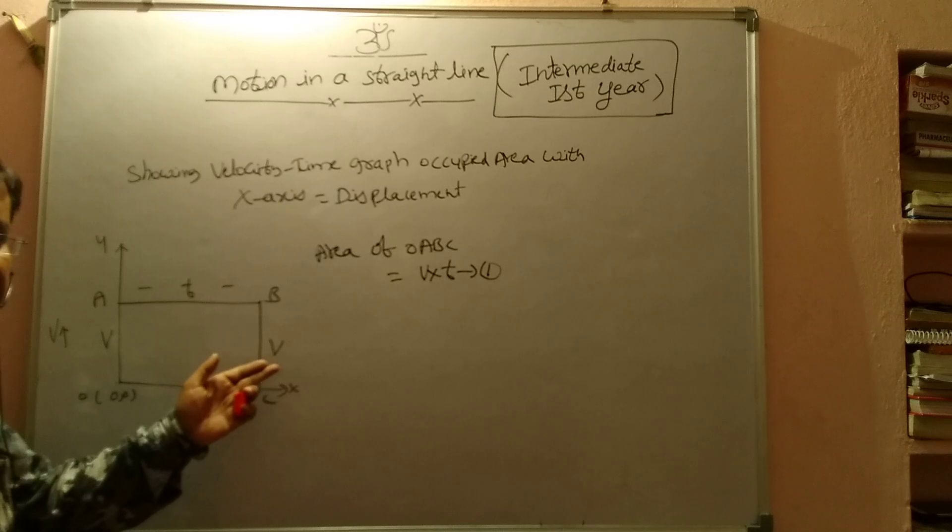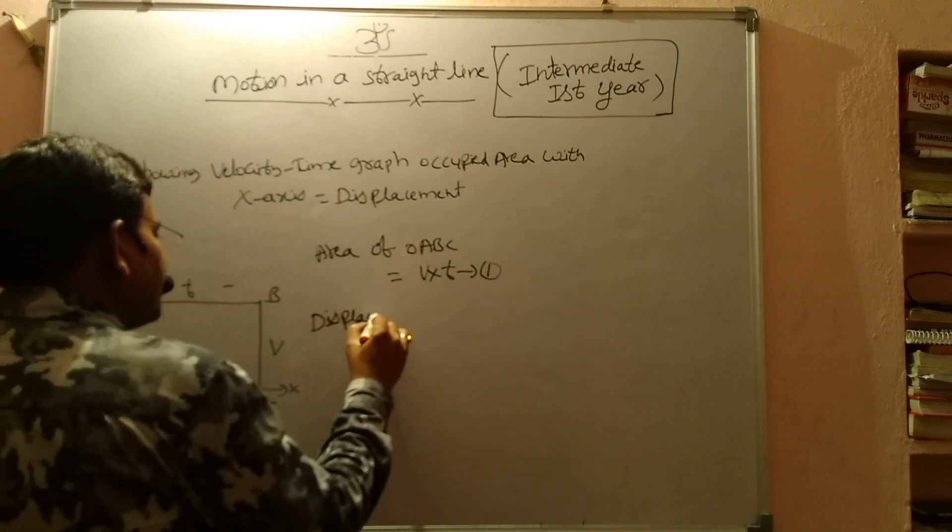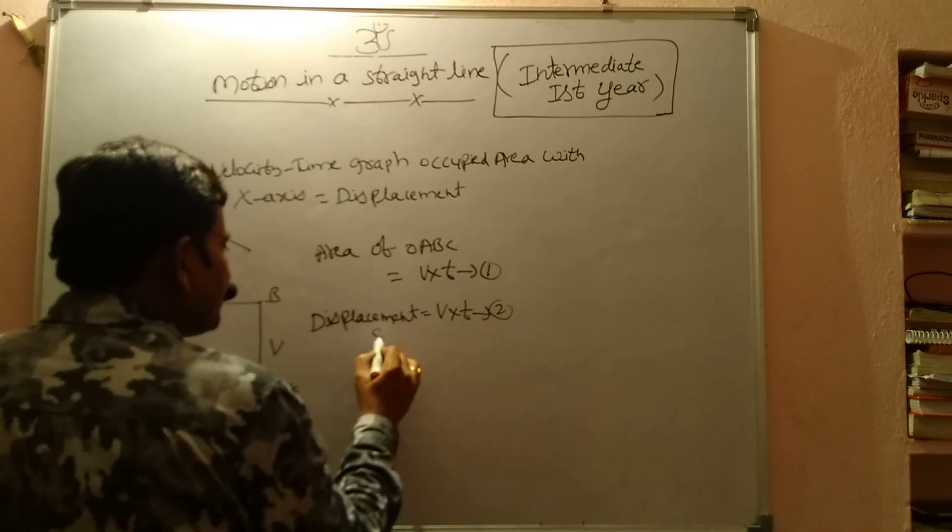One body moving with uniform velocity - what is the form of displacement? Displacement equals, if it is moving with uniform velocity, velocity into time. So that is the displacement.